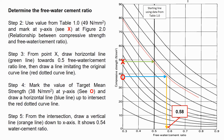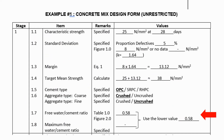Step 4: mark the target mean strength of 38 N/mm² on the y-axis at point O, and draw a horizontal blue line up to intersect the red dotted curve line. Step 5: from the intersection, draw a vertical orange line down to the x-axis — it shows a water to cement ratio of 0.58. Since there is no maximum free water to cement ratio restriction, we use 0.58 as the free water to cement ratio.